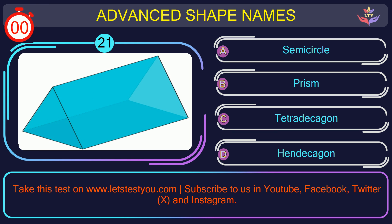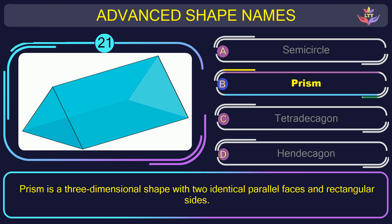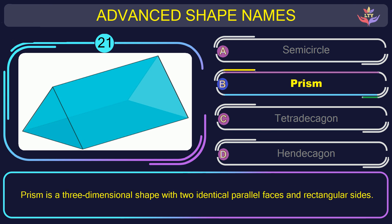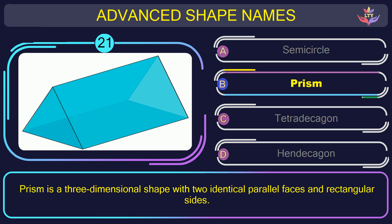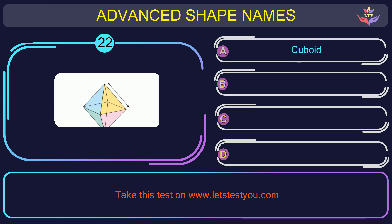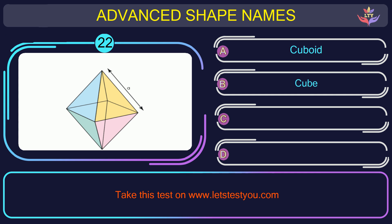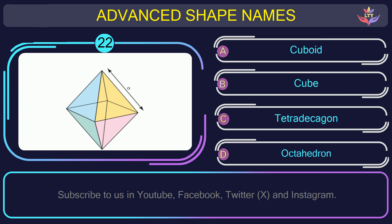Question number twenty-one. Could you recognize the name of the shape in this picture? The correct answer is option B. Prism. Prism is a three-dimensional shape with two identical parallel faces and rectangular sides.